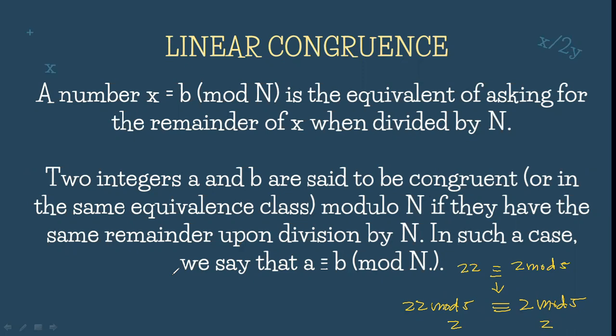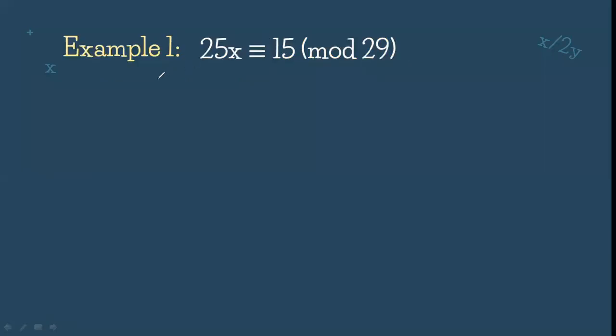However, what if the questions involve x? For example, in problem number 1, we have 25x is congruent to 15 mod 29. What do we multiply to 25 to make it congruent to 15 mod 29?